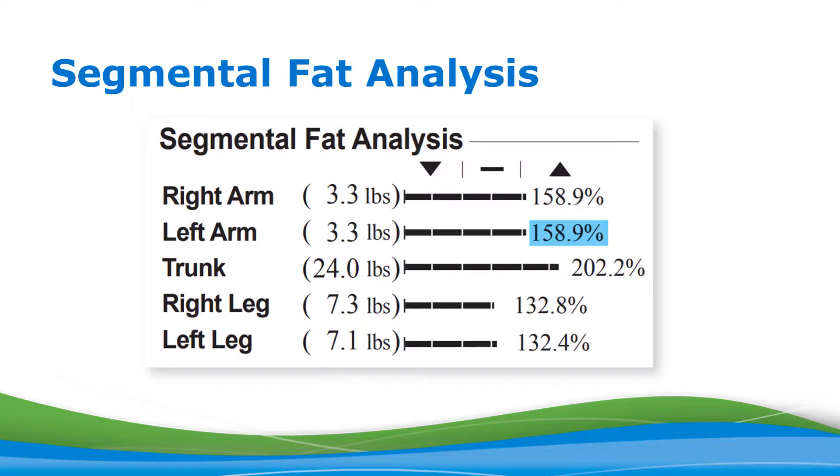The segmental fat analysis graph on the upper right works very similarly. This section breaks down the fat content for each segment of the body. In this example, our individual has 3.3 pounds of body fat in their left arm. For a person of their height and gender, that's 158.9%, meaning this person has 58.9% higher body fat than the average person of the same height and gender.